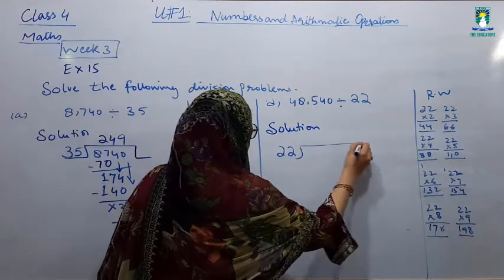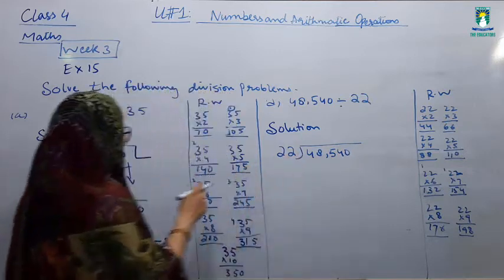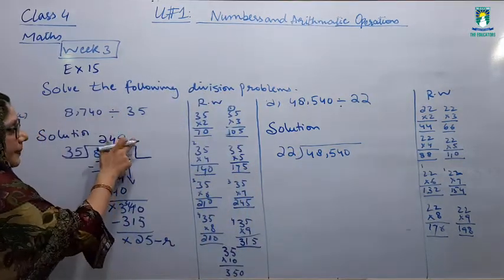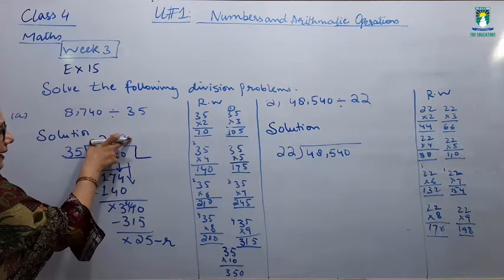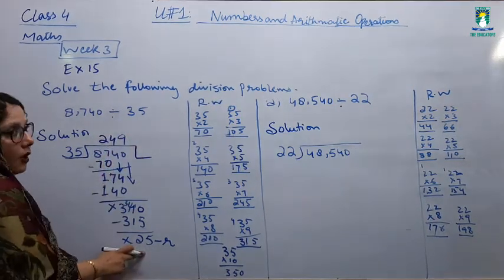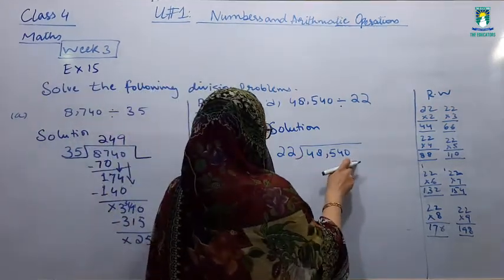22 is divisor. 48,540 is dividend. Okay? And the value comes. We have multiplied by 2, 4, 9, 8. First we have 2, 2, 0, 4. We call quotient. And this is the remainder.